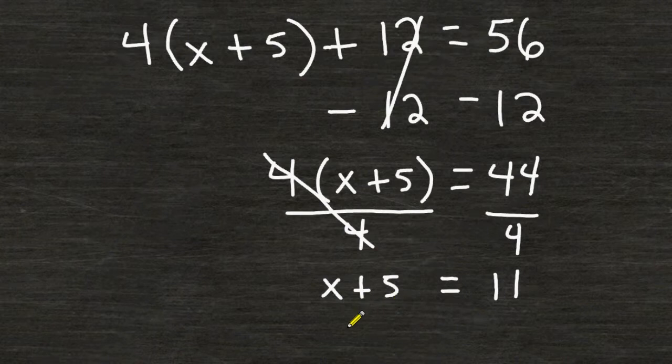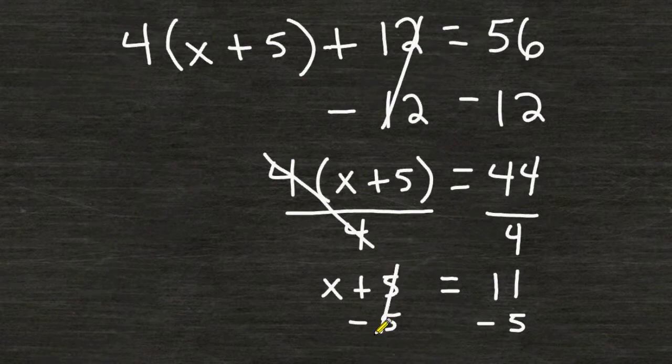But to show work all the way until we get an answer, you would subtract 5 on both sides of your equation. The opposite integers cancel out, leaving us only with x on this side, and on this side we have 11 take away 5 which is 6. So we would say that x is equal to 6.